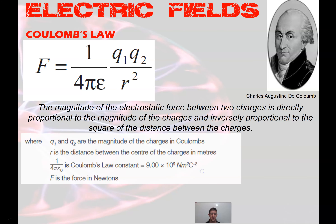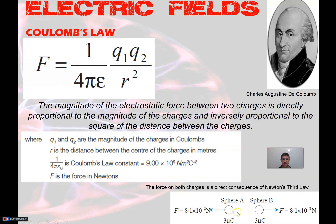Coulomb's law states that the magnitude of the electrostatic force between two charges is directly proportional to the magnitude of the charges and inversely proportional to the square of the distance between them. The q's represent charges in coulombs — q1 is the charge of one object, q2 is the charge of the other, and r is the distance between them. The term 1 over 4πε₀ is Coulomb's constant — similar to big G in gravitation — and is given on the formula sheet.